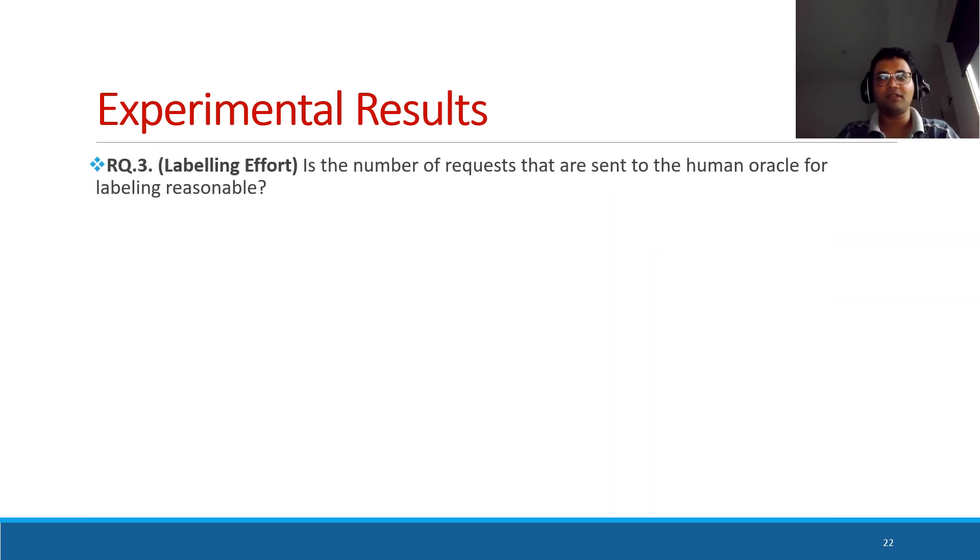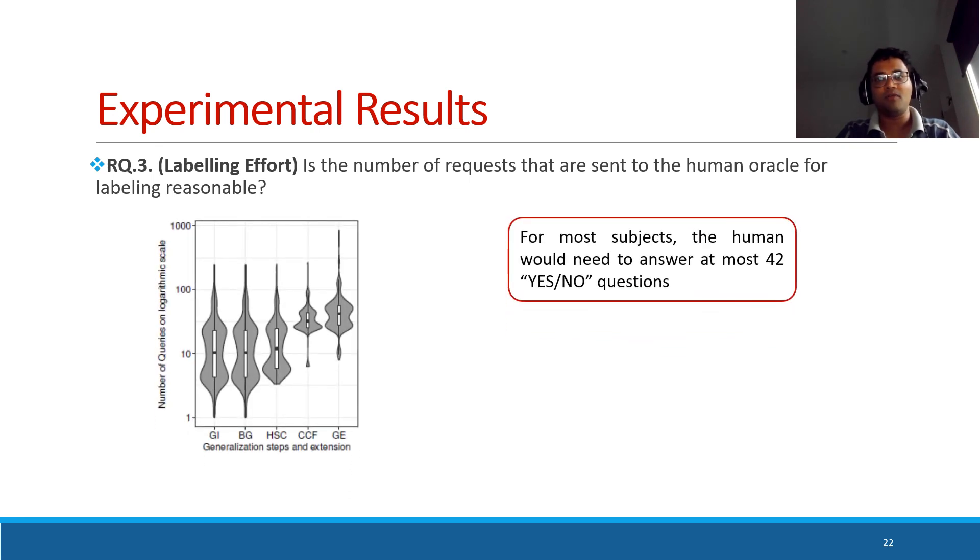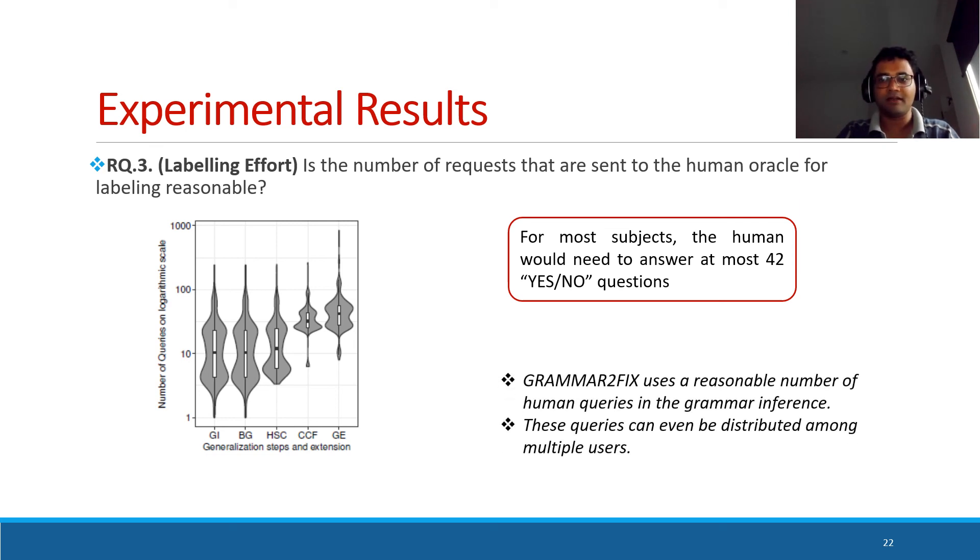Under research question 3, our focus was on the human labeling effort. This is a graph in log scale. Basically, we identified that for most subjects, the human would need to answer at most 42 yes/no questions. This is something reasonable, even though the number of queries are higher in some cases, it can be distributed among multiple users.